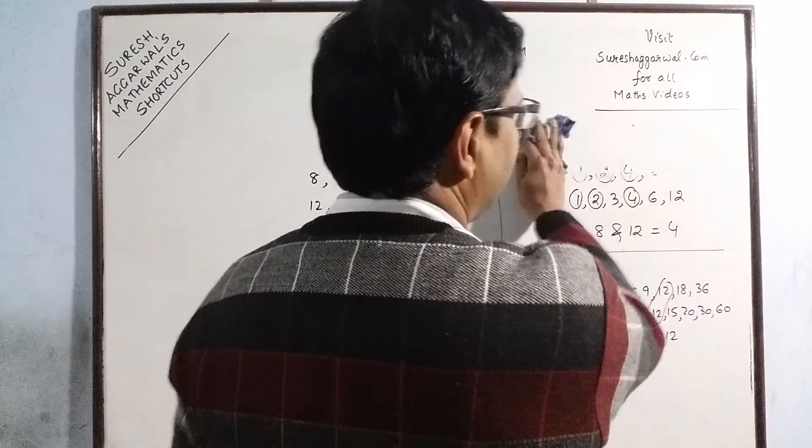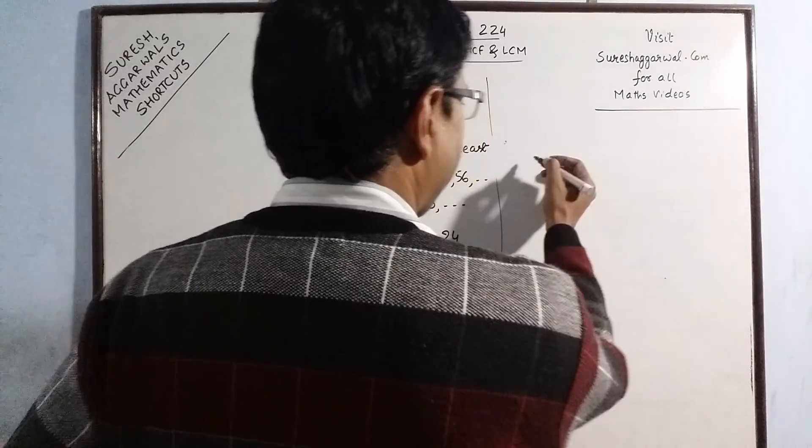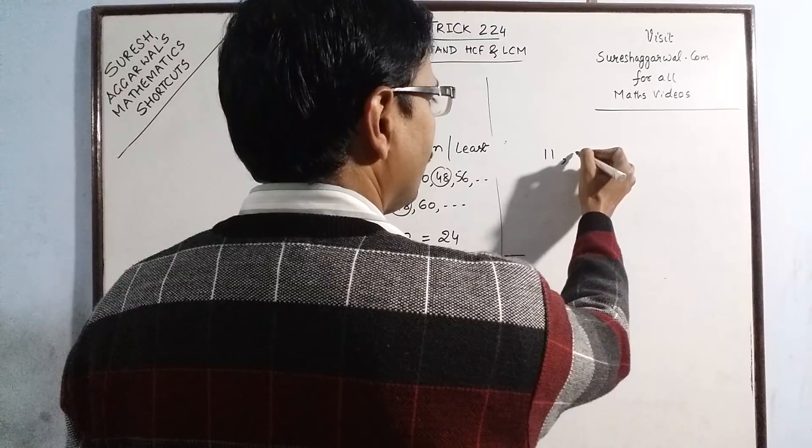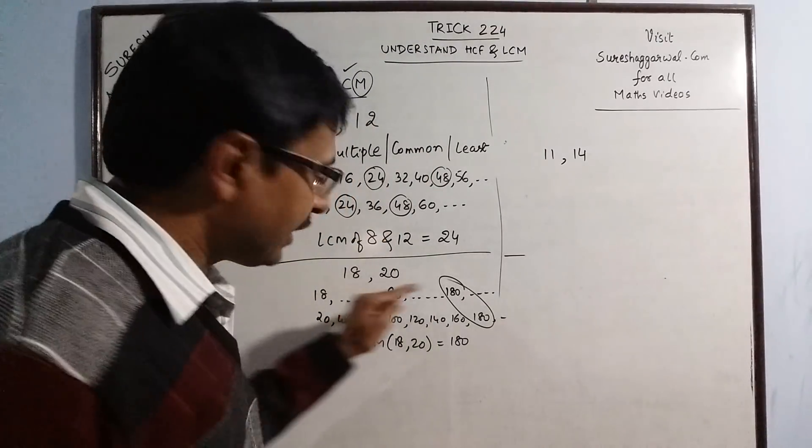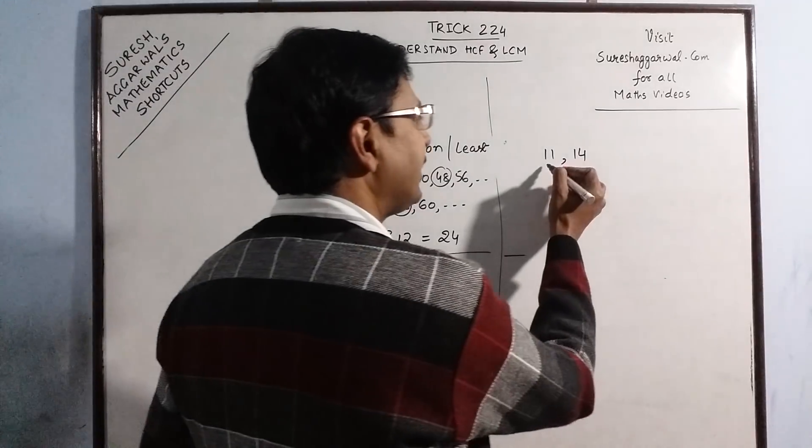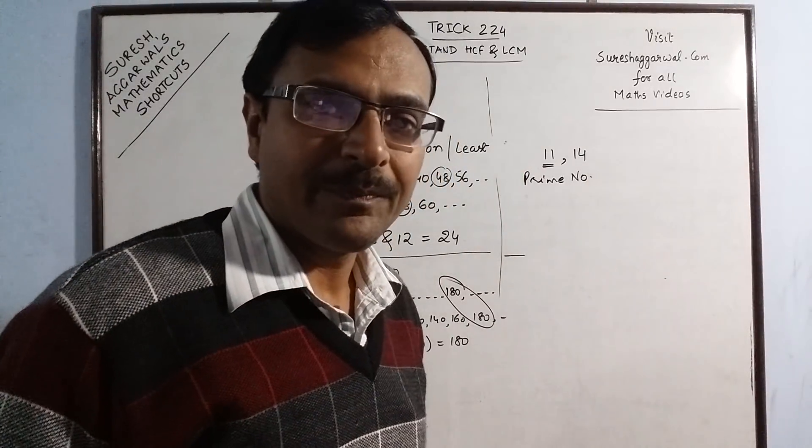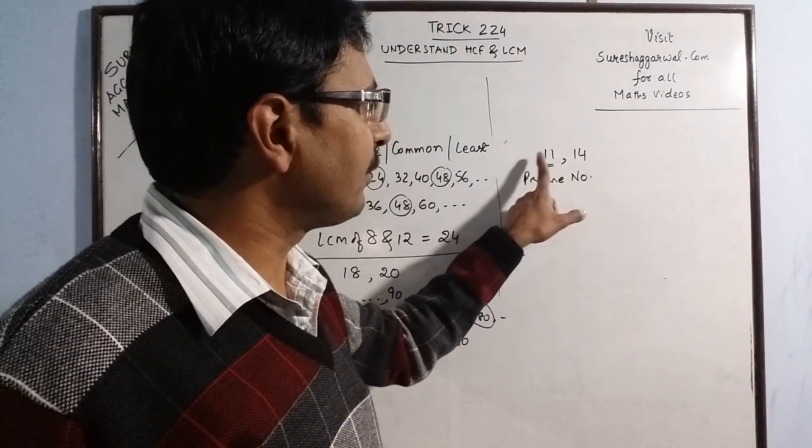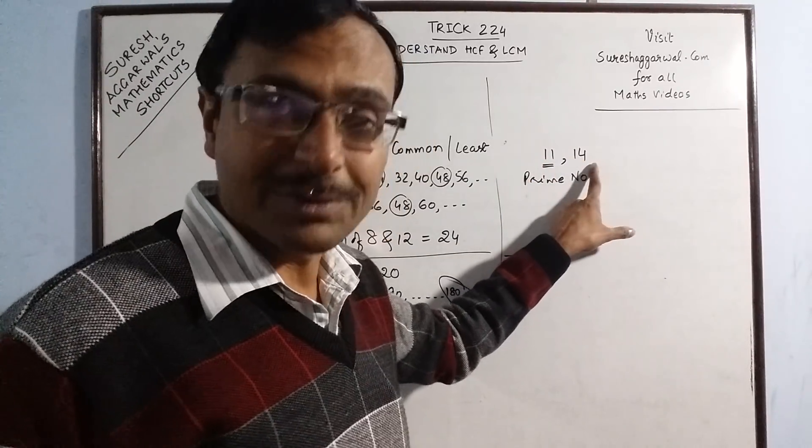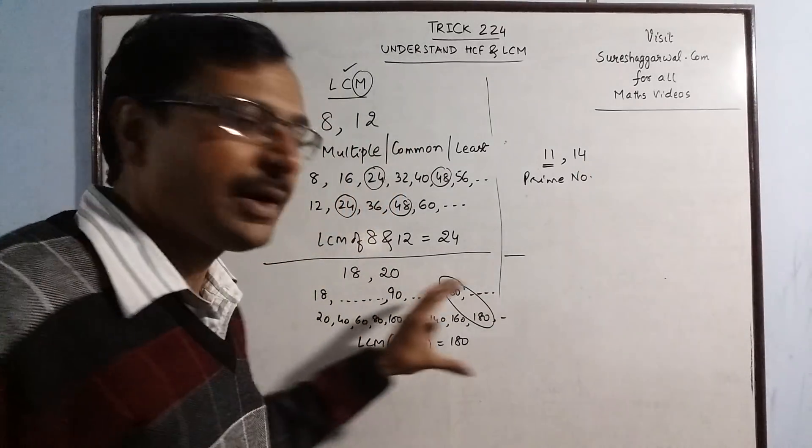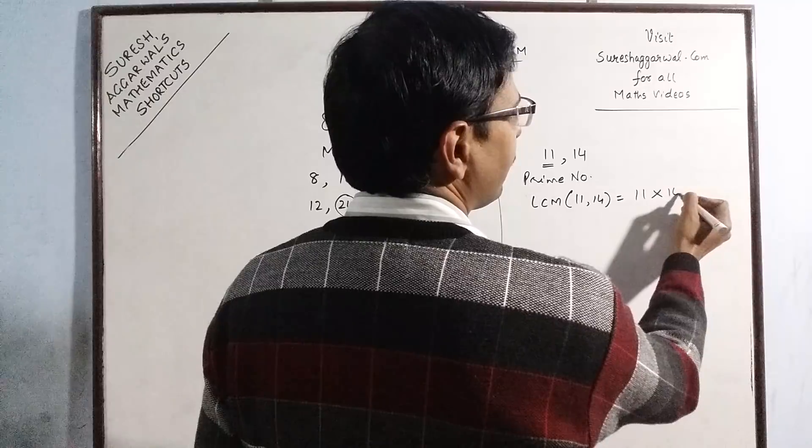Suppose now I have to find the LCM of a number which is prime. Now see, suppose I have 11 and 14. Now for finding the LCM of 11 and 14, I don't need to write the tables also. Why? Because 11 is a prime number. Now whenever a number is prime, then it can have a common factor with the other number only if the other number is the same number. Now I can have 11 as a factor of the other number if this number is also divisible by 11. But 14 is not divisible by 11. So I don't need to write the tables. Just write the LCM of 11 and 14 which will be equal to 11 multiplied by 14 which is 154.